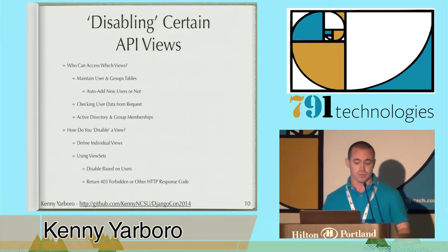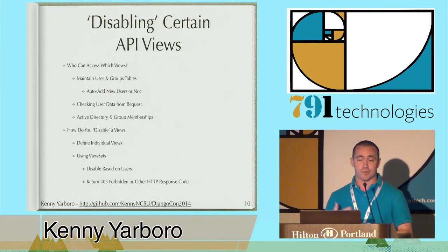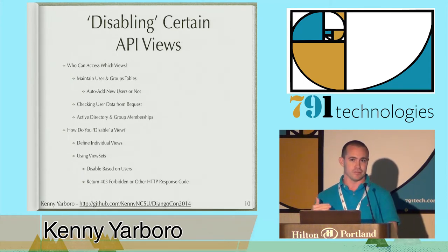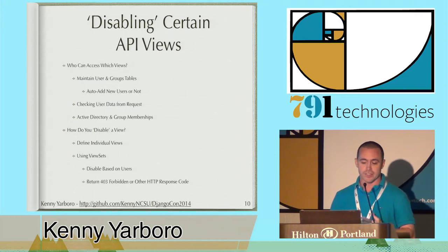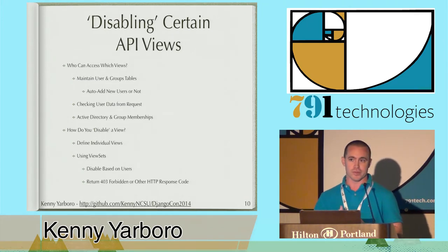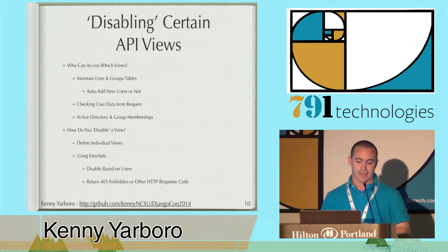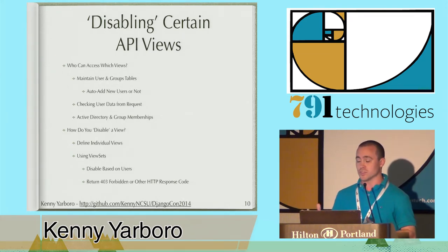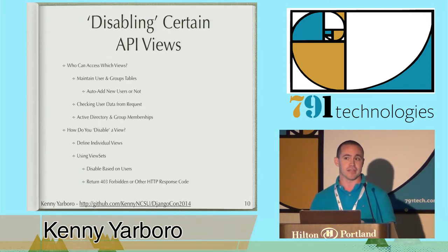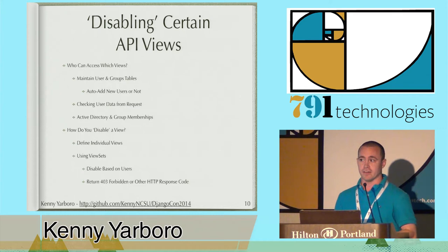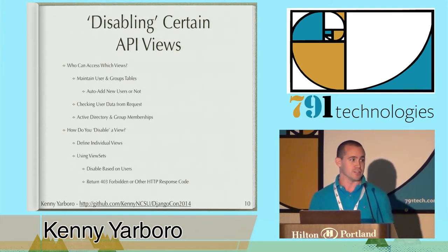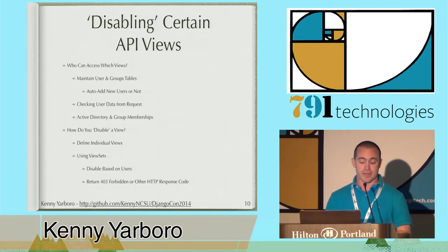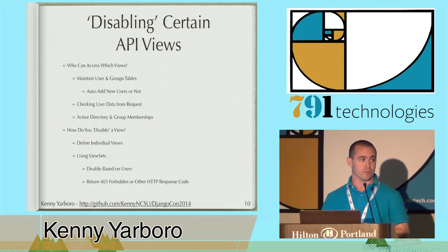For disabling a view, if you're writing custom views — say you've written a GET view but not a POST view — that may take care of itself. For us, we're using view sets so all REST API actions are already available, which meets our internal company REST API standards and gives us growing room. Right now we don't support a DELETE method, but we have it in there because eventually we may. So if someone calls DELETE on any of our views, we just return a 403 Forbidden. Depending on your application needs, you could return a different response code.